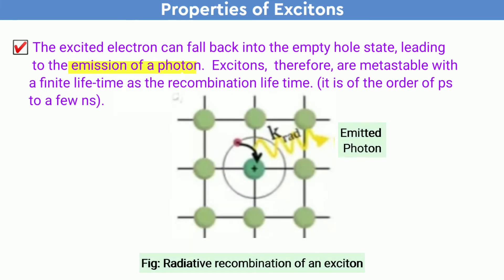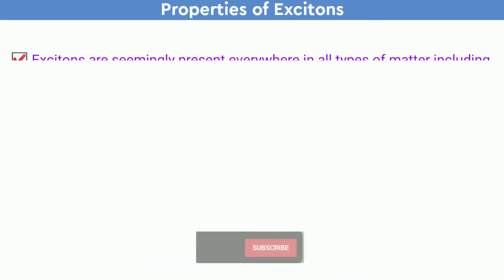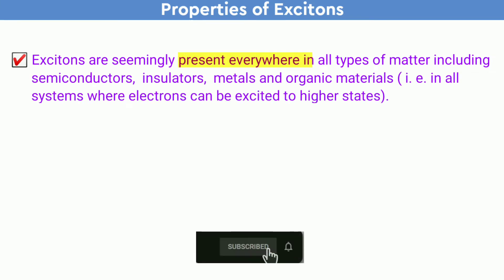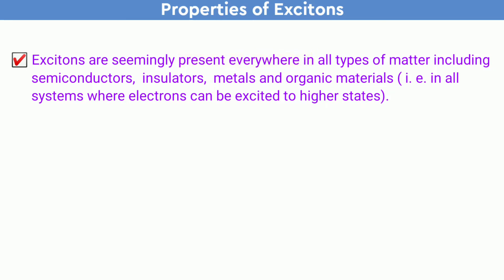Excitons are therefore metastable with a finite lifetime. The recombination lifetime is of the order of a picosecond to a few nanoseconds. Excitons are seemingly present everywhere in all types of matter including semiconductors, insulators, metals, and organic materials — that is, in all systems where electrons can be excited to a higher state.